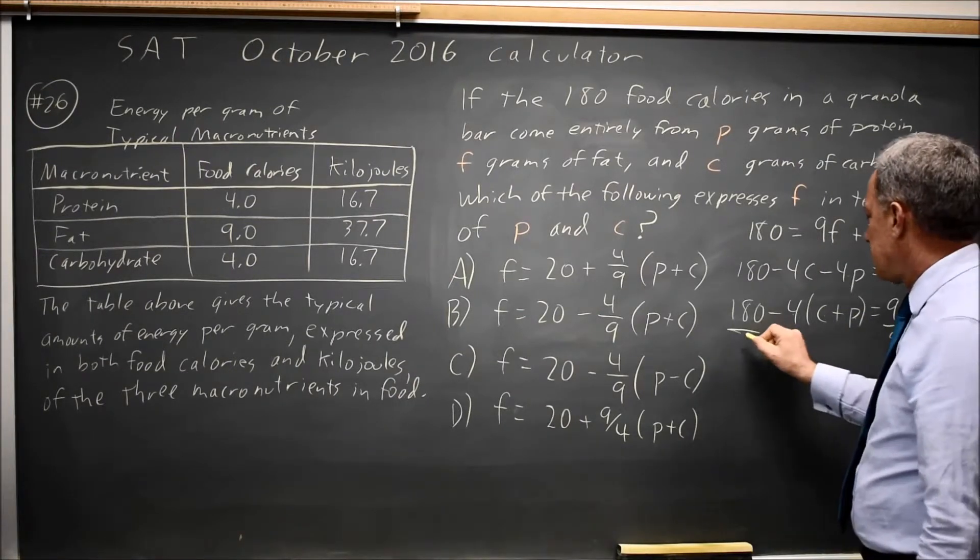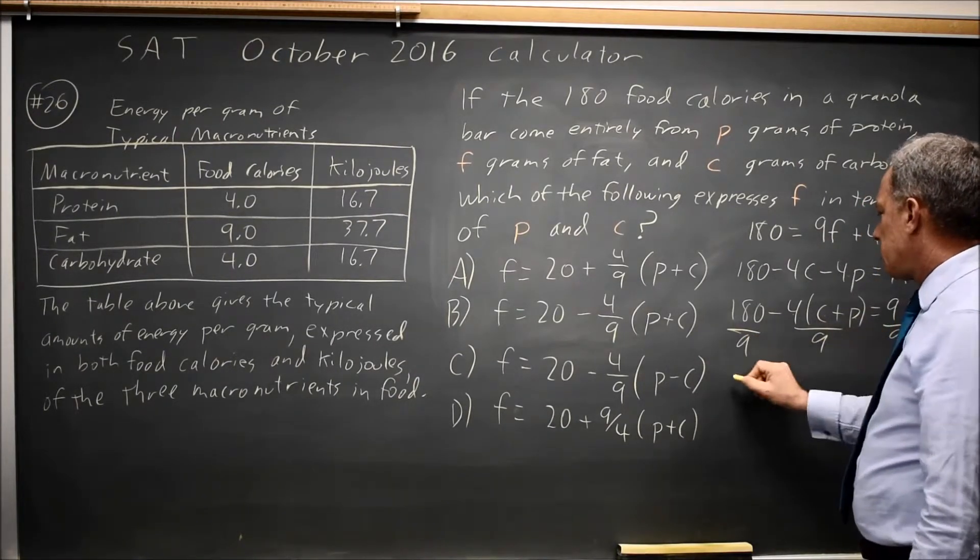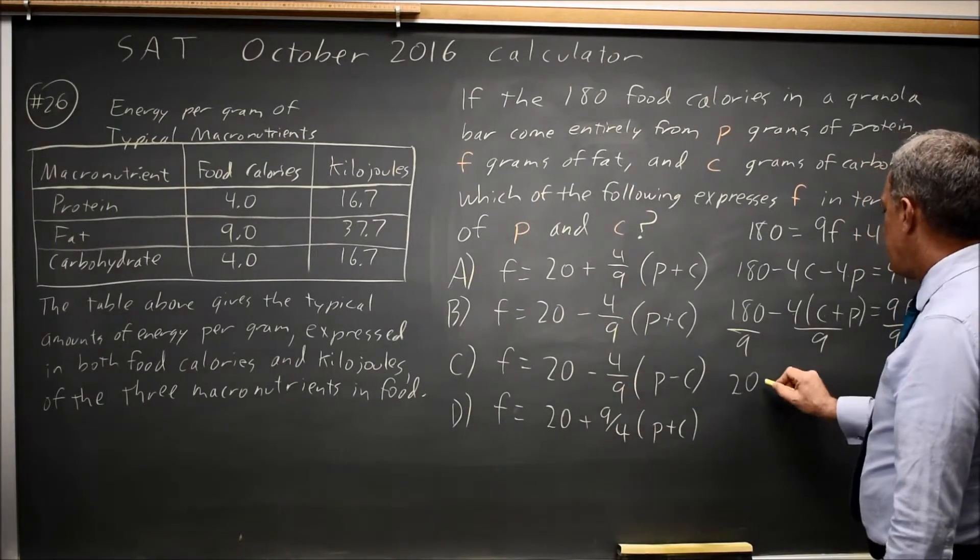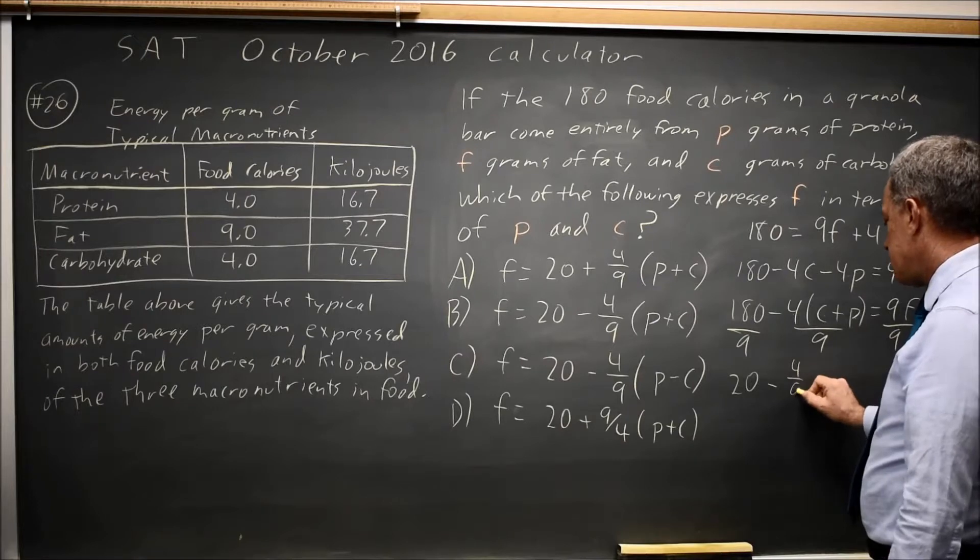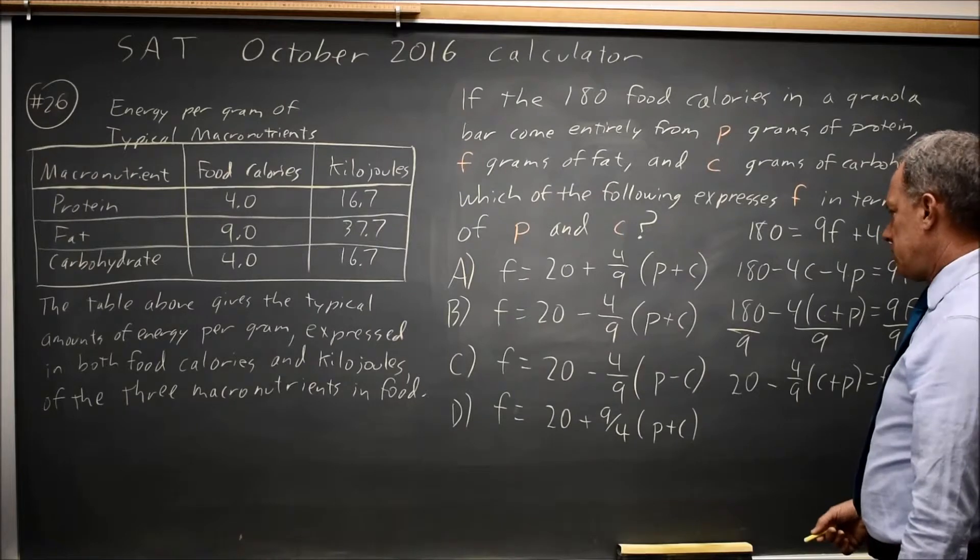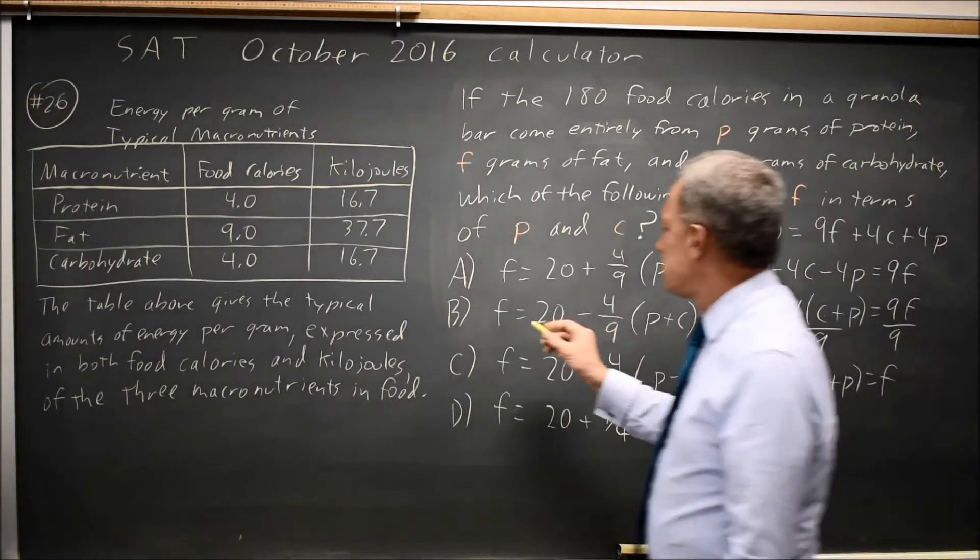Now if I divide both sides by 9, I get 180 over 9, which is 20. We knew that because all the choices start with 20. And then minus 4 ninths of the quantity C plus P equals F, and that would be choice B.